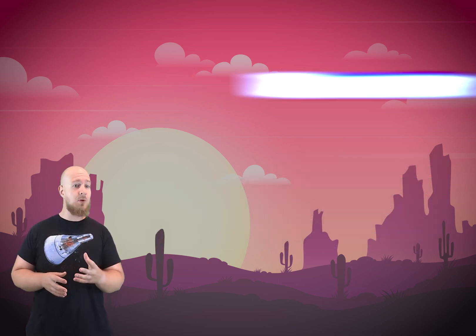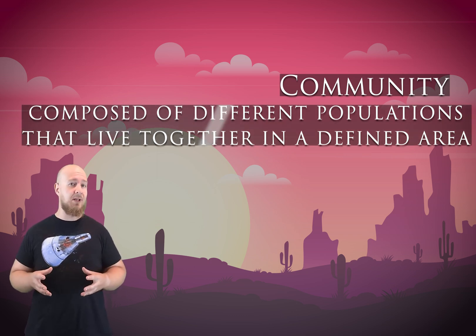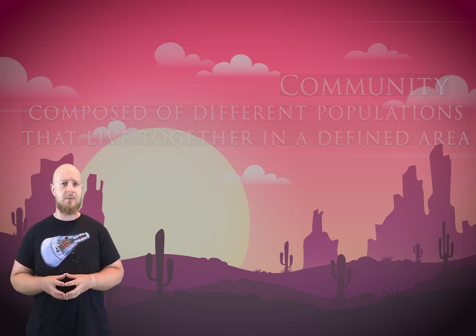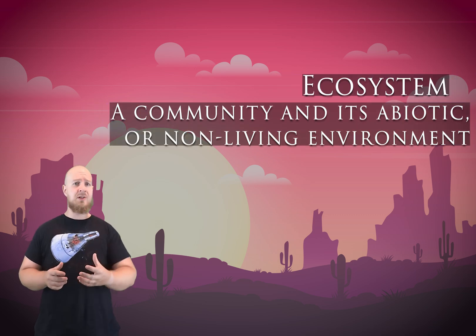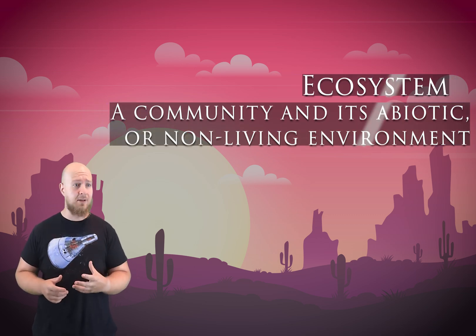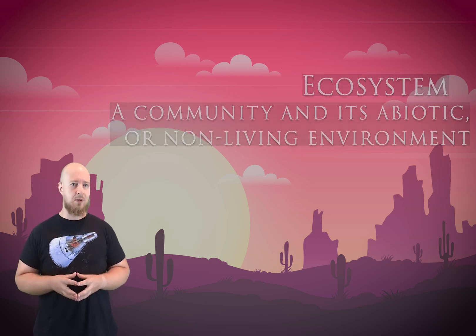A community is composed of different populations that live together in a defined area. And finally, an ecosystem is a community and its non-living, or abiotic, surroundings.